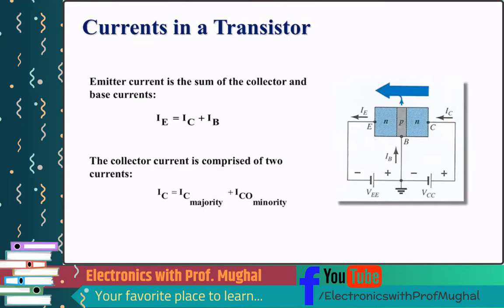Currents in a transistor. You know how we get this equation? IE—collector current equals to, sorry, emitter current equals to collector current plus IB.